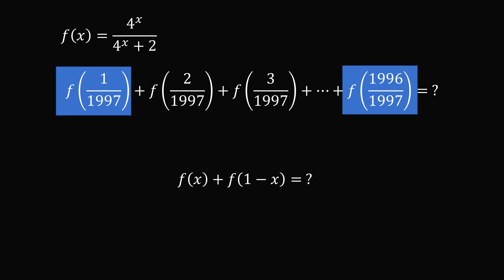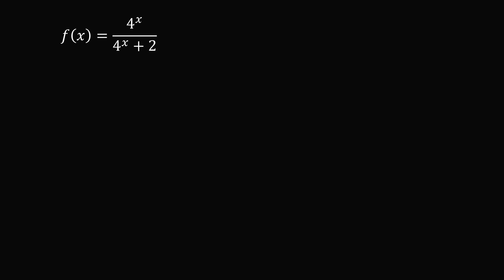It turns out there is a pattern like this. Let's evaluate f of 1 minus x. This is equal to 4 to the power of 1 minus x divided by 4 to the power of 1 minus x plus 2. Let's try to rewrite this fraction so it has the same denominator of 4 to the power of x plus 2.